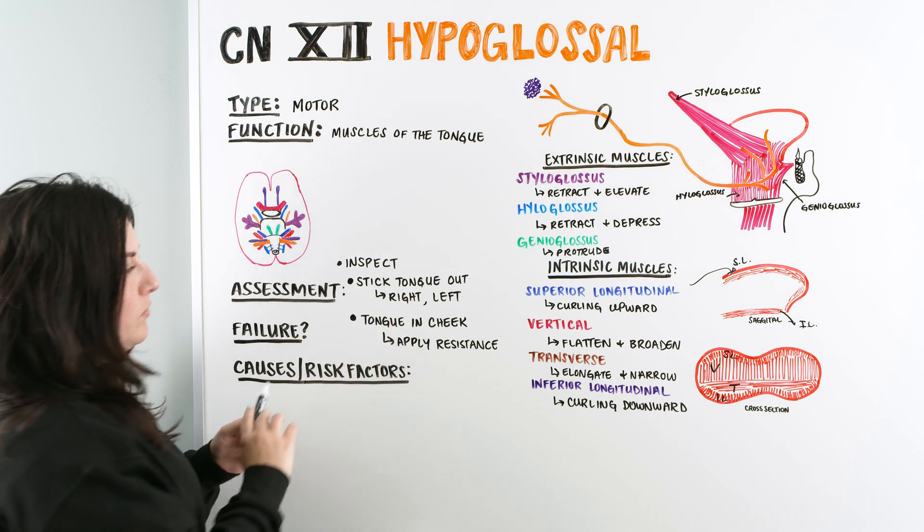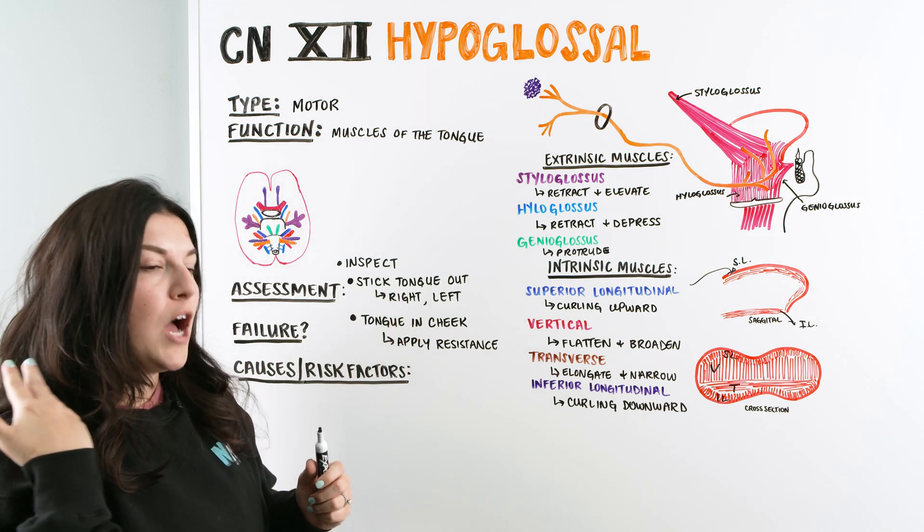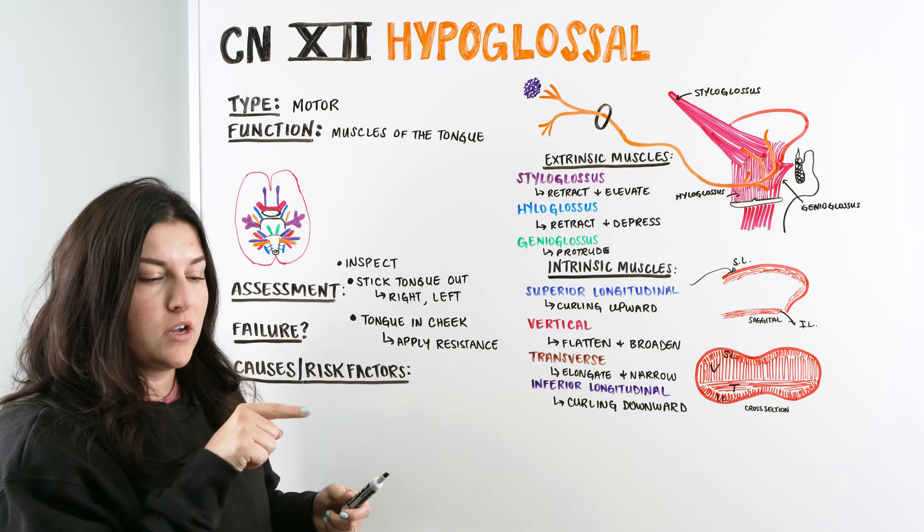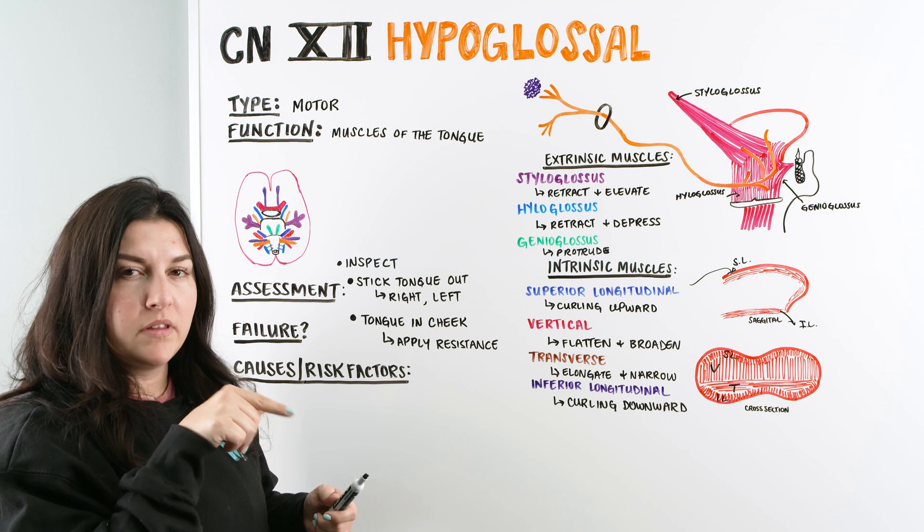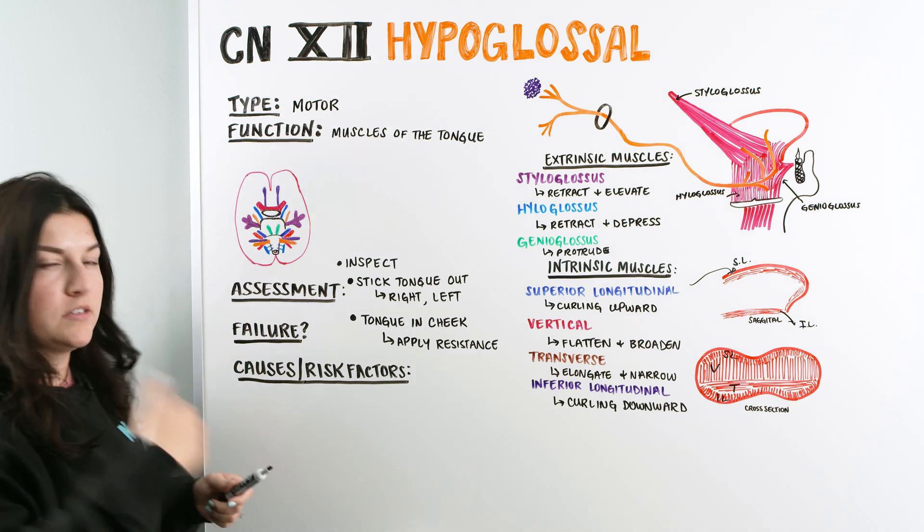And when we're doing this assessment, we want to make sure that things are symmetrical on the right and the left, right? Because is it the hypoglossal nerve on the right side versus the hypoglossal nerve on the left side? So when the patient sticks their tongue out and there's a deviation, typically the deviation is going to go to the side that is affected. Or if there's atrophy, typically it's on the side that's affected.